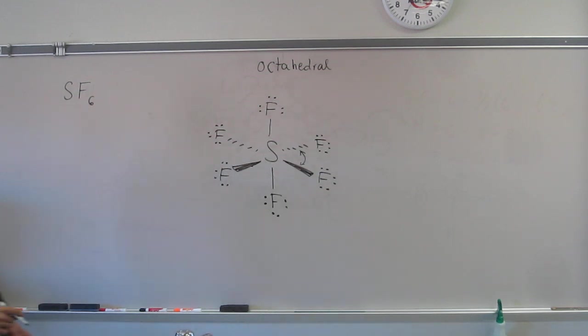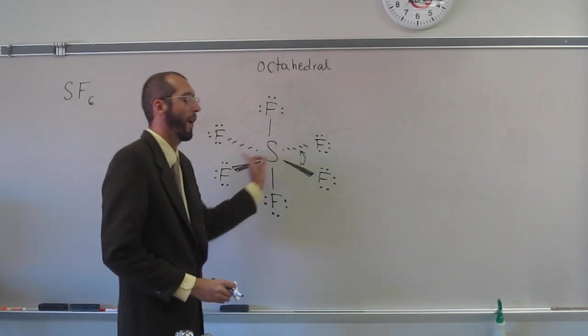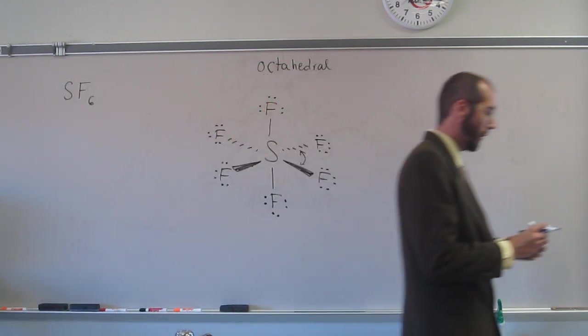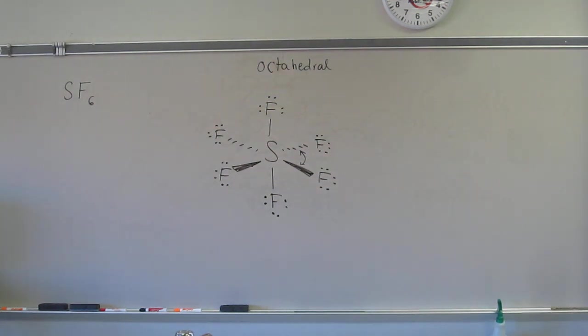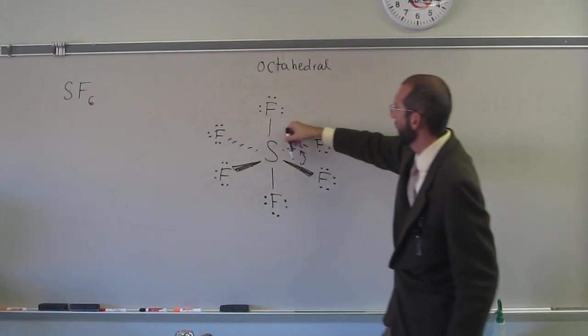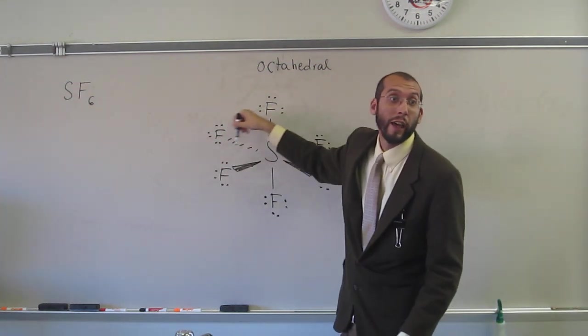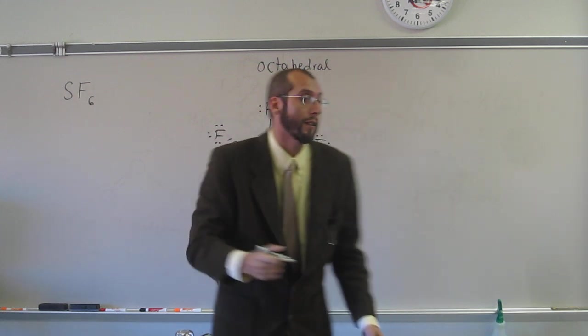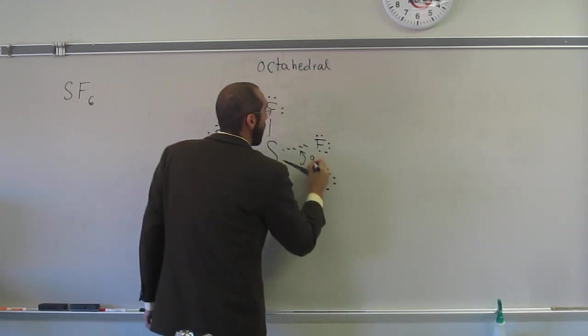So we've got four around that equatorial axis. So what is the furthest four things can be on a straight line, around a circle? What is that? Ninety. Ninety, right, 360 divided by four would be 90, because they're all on the same plane, right? Do you see that? They're all on the same plane, so it has to be 90 degrees.